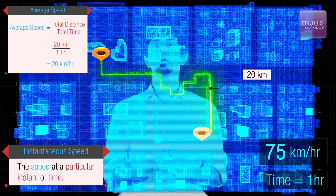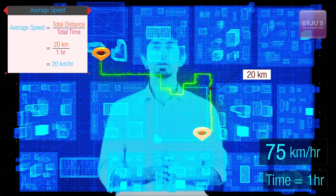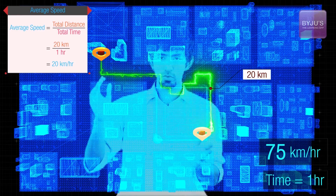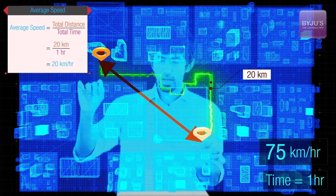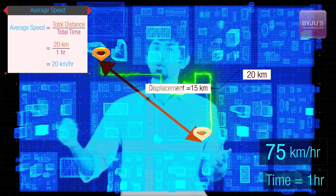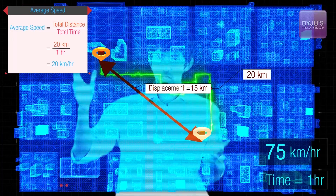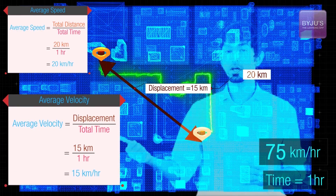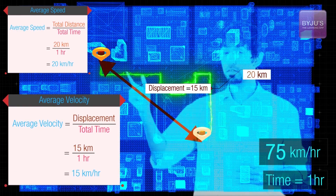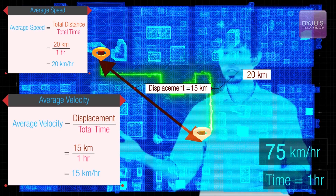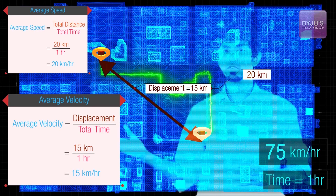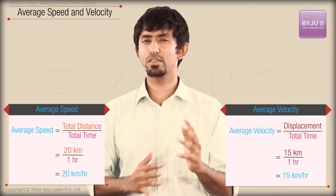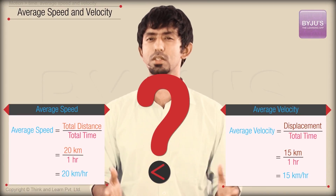Now what about velocity? Irrespective of what path you took, if the straight-line distance between you and your friend's house was only 15 kilometers, and you took a path that was 20 kilometers, then what's your average velocity? It's 15 kilometers per hour. Your average speed is 20 kilometers per hour but your average velocity is 15 kilometers per hour. Now the question is: can the average speed ever be lower than your average velocity?